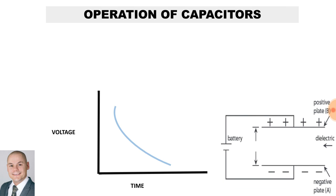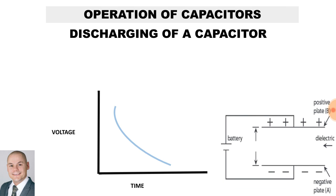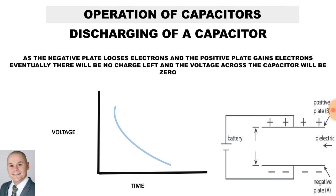In terms of discharging of a capacitor, as the negative plate loses electrons and the positive plate gains electrons, eventually there will be no charge left and the voltage across the capacitor will be zero.